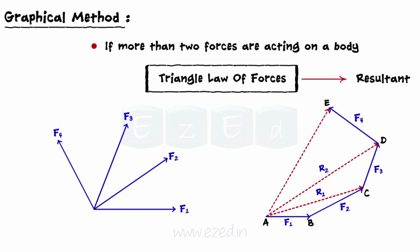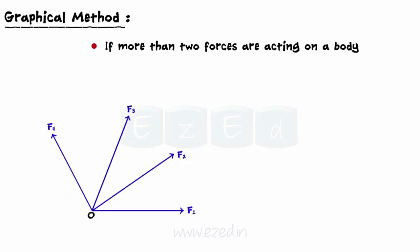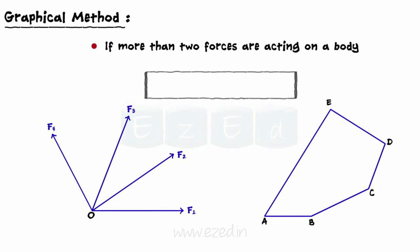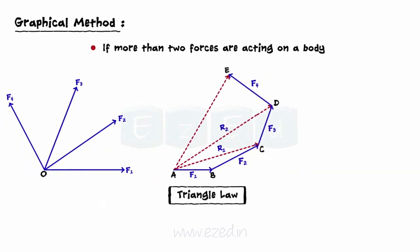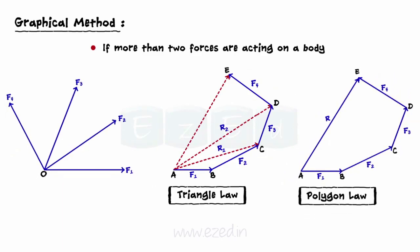Similarly, if DE is drawn to represent F4, in triangle ADE, AD represents R2 and DE represents F4. AE represents the resultant of F4 and R2, that is, the resultant of F1, F2, F3, and F4. Instead of constructing a set of triangles of forces, this result may be obtained by constructing a force polygon ABCDE using the polygon law of forces. Line AB is drawn to represent force F1 in magnitude and direction, line BC represents the next force F2, and this process continues till all the forces are represented. Then, the closing line of the resulting polygon is drawn. Thus, we can use both triangle law and polygon law of forces to find the resultant of a concurrent force system of more than two forces.